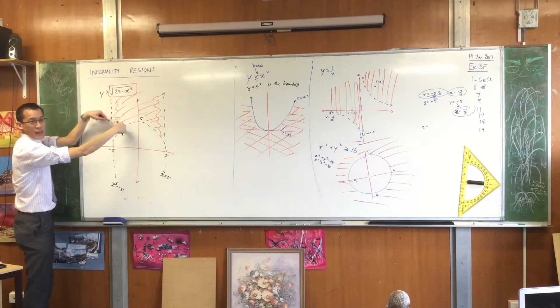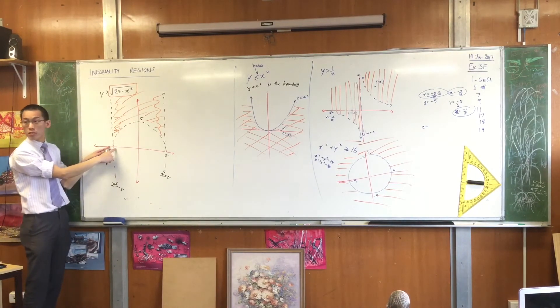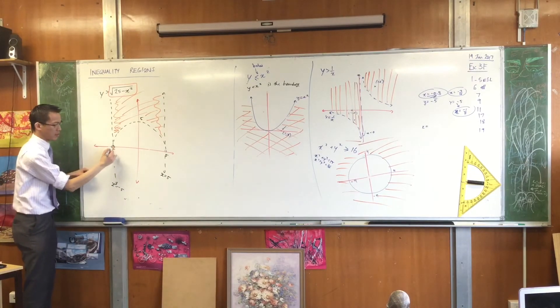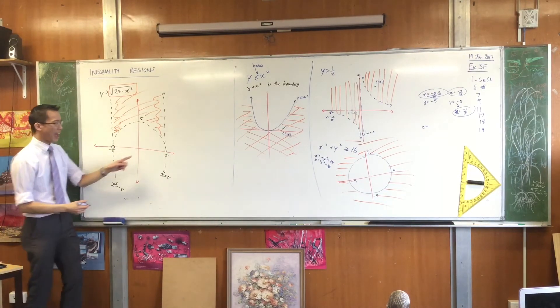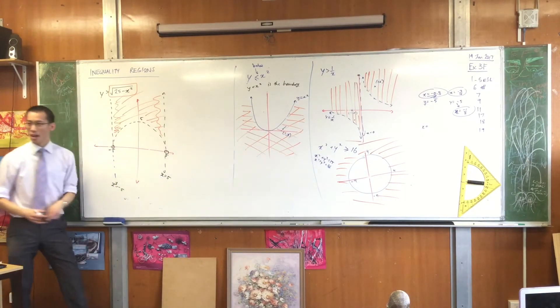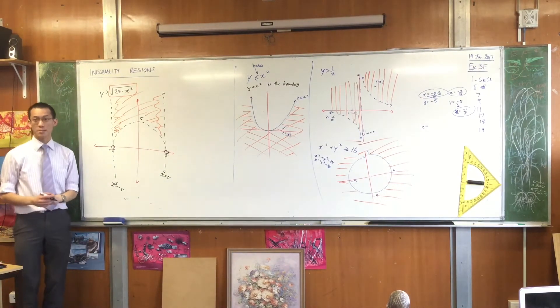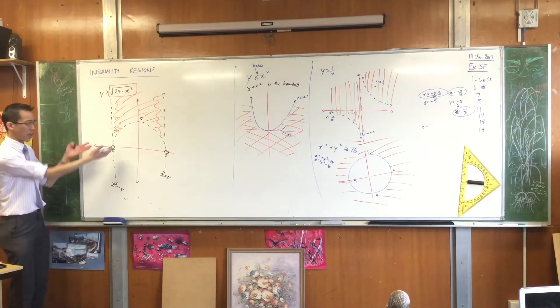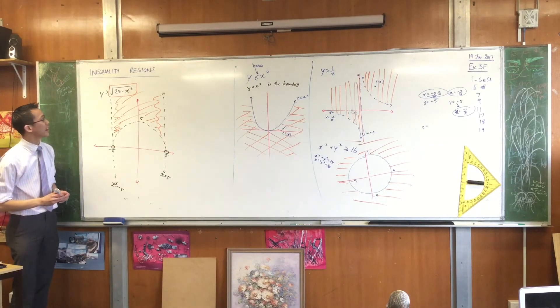See, these guys come together and they meet at what coordinates? Negative 5, 0. There's a boundary point there. And 5, 0. That is also a boundary point. Are they going to be included in my inequality or not? They're not going to be included, are they? So I'm going to leave them hollow just like I would on a number line, okay?